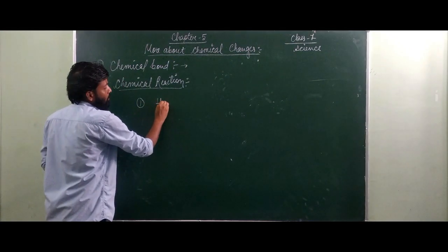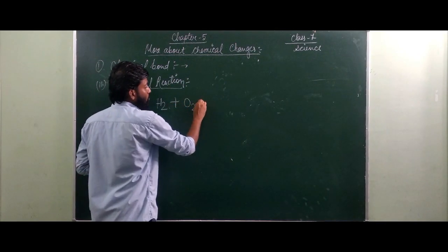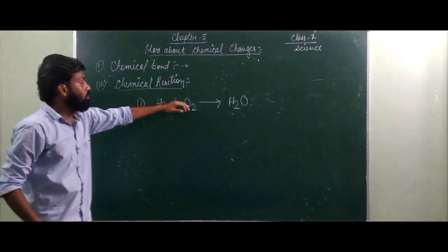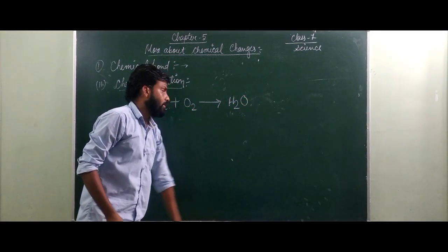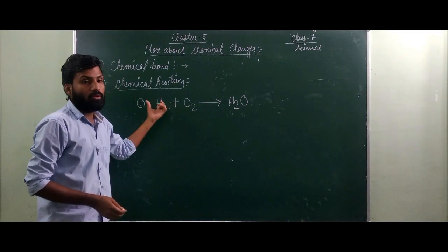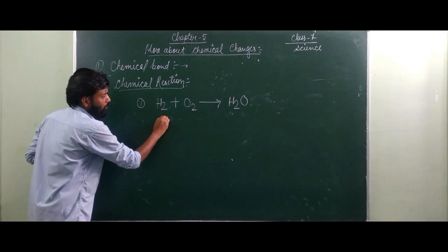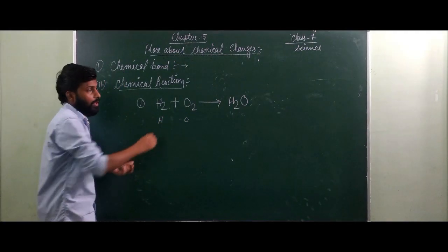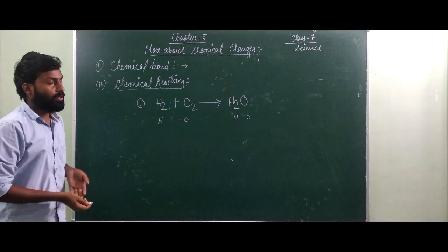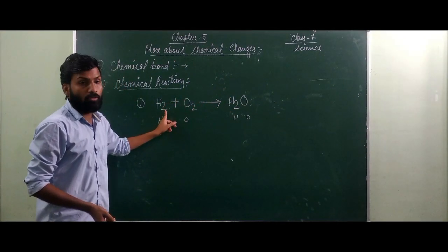Let us see one example: H2 plus O2 combining to give H2O. Hydrogen gas combined with oxygen gas to give water. Now you can see that although new substances are formed here, the elements are not changed. Here we have hydrogen and oxygen; in the outcome we also have hydrogen and oxygen. Whatever elements you have before the reaction, you have the same elements after the reaction also.